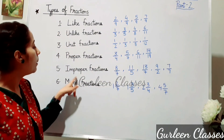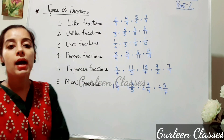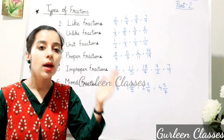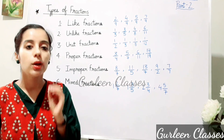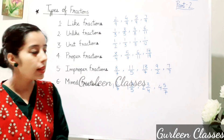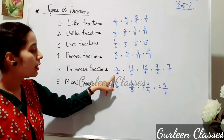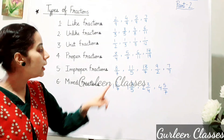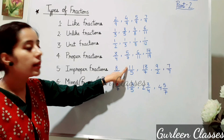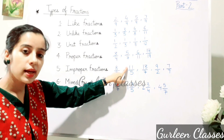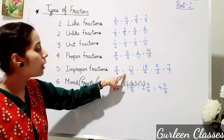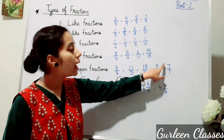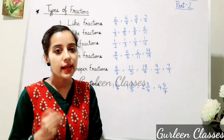Next, improper fractions. A fraction whose numerator is greater than or equal to the denominator. For example: 8/7 — here the numerator is greater than denominator 7; 11/5 — numerator 11 is greater than denominator 5; 13/7, 9/2, and 7/7.